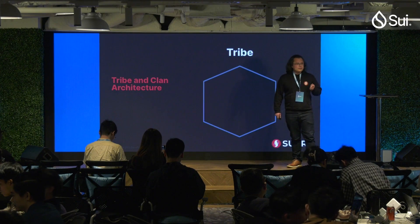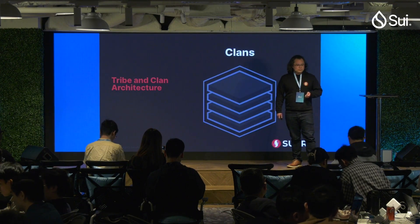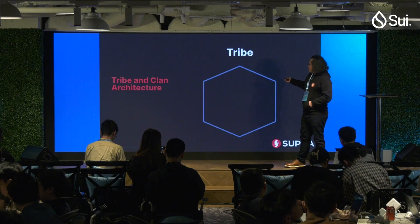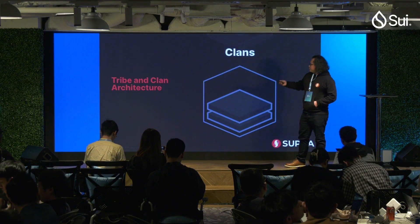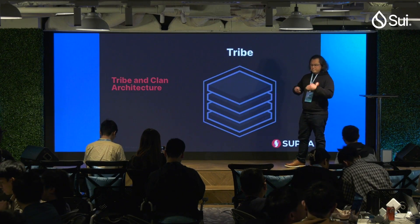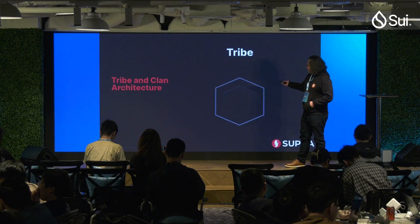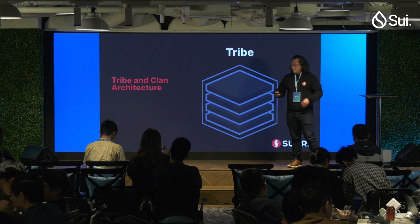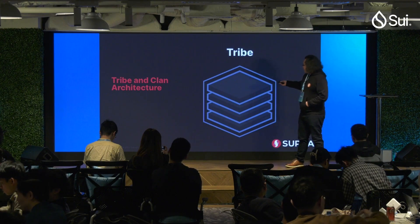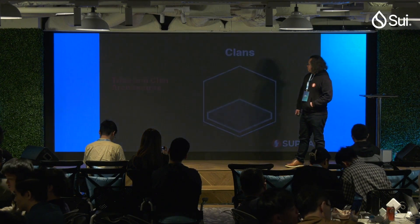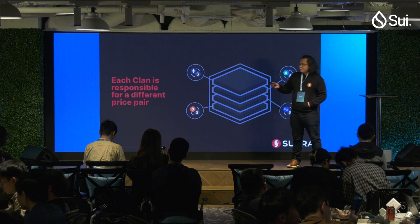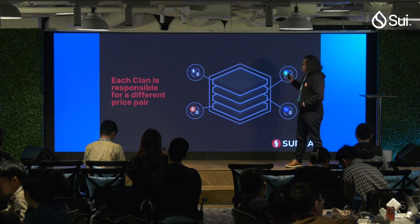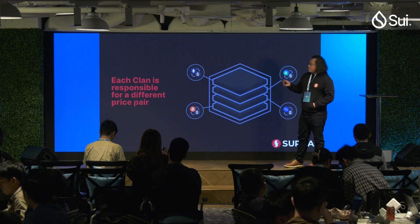Supra has a very unique architecture: we organize the nodes into tribes and clans. Tribes are a large committee, say 400 to 500 nodes. Clans are subcommittees that are randomized into groups of nodes which constitute a clan. To make our protocol highly efficient, we do something we call commodity sharding.